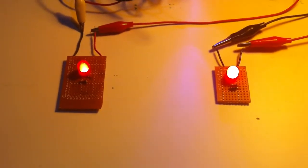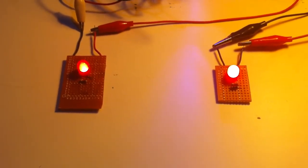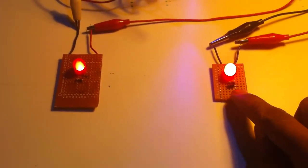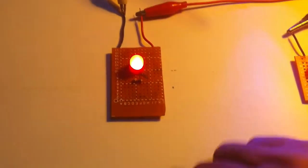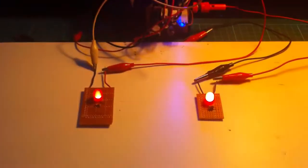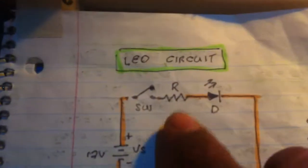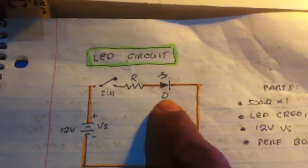Hello everyone, welcome to my channel. We have a new circuit here - let us see the circuit. It's an LED, a resistor, and a diode. The circuit has a 12 volt supply, a switch, a resistor, and an LED.